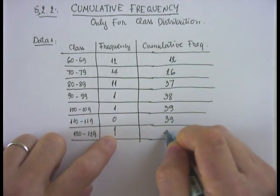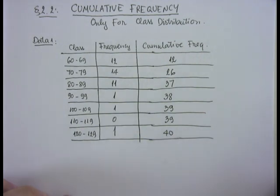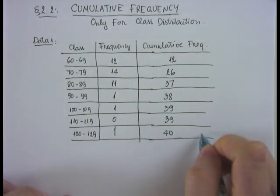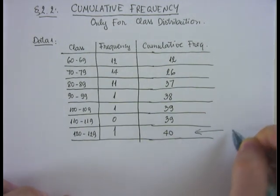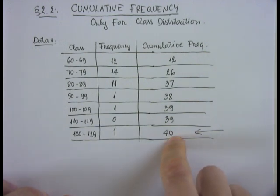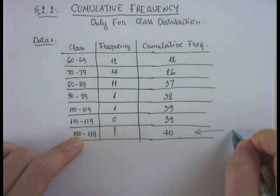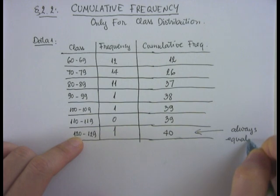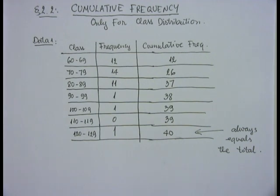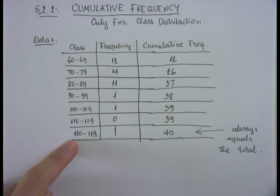As a rule, the final cumulative frequency at the very last class always equals the total. If you're calculating your cumulative frequency correctly, the cumulative frequency at your very last class should always equal the total.